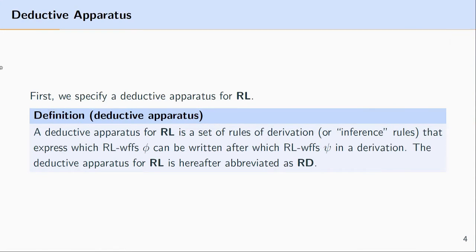In this video what I'd like to do is just go over some terms that are important for understanding what's going on when we talk about predicate logic proofs. The first part is the deductive apparatus for predicate logic. The deductive apparatus for predicate logic refers to a set of rules of derivation.